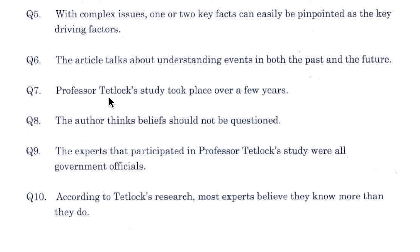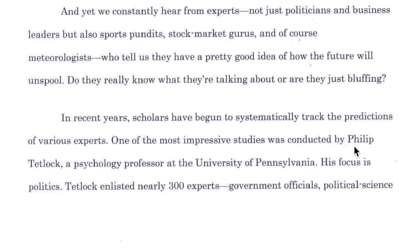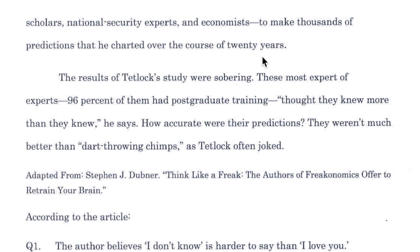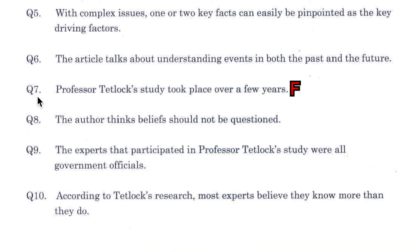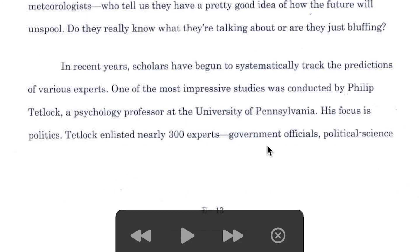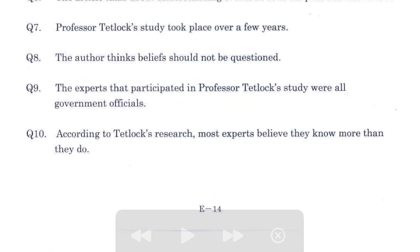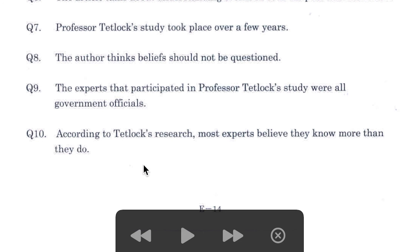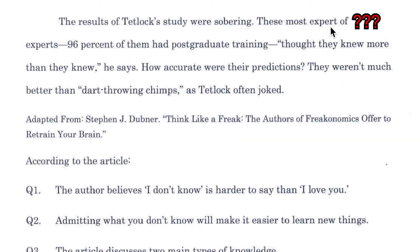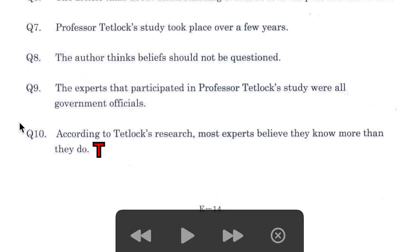Number 7: Professor Tetlock's study took place over a few years. He charted over the course of 20 years — much longer than a few years. False. Number 8: the author thinks beliefs should not be questioned. False. Number 9: the experts that participated in Professor Tetlock's study were all government officials. The participants included political science scholars, not only government officials. False. Number 10: most experts believe they know more than they do. 90% of these expert of experts thought they knew more than they did. True.